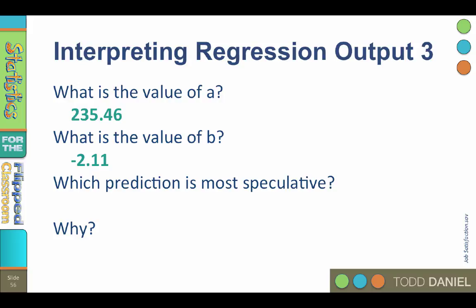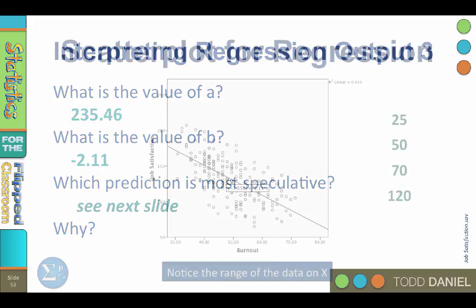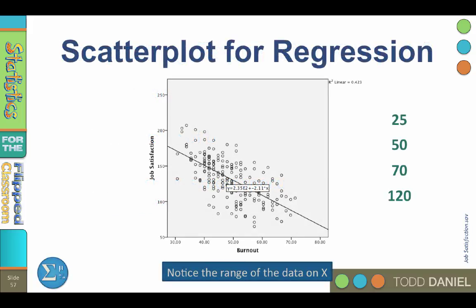Which of the predictions that we did was most speculative — the least valid? Any guesses? In order to answer this, we should look to the next slide and examine the scatter plot. This is the scatter plot for burnout predicting job satisfaction. We are trying to predict the x values of 25, 50, 70, and 120.